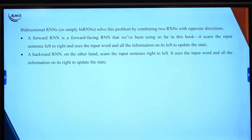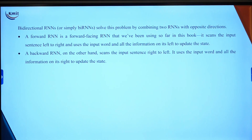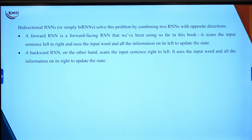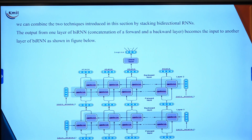Bi-directional RNNs solve the problem by combining two RNNs in opposite directions. The forward RNN scans the input from left to right, using the current word and all information from left to right. The backward RNN scans the input from right to left, scanning the same sentence again.